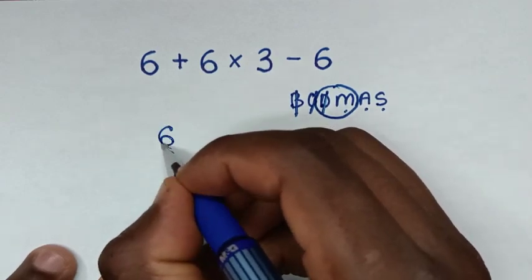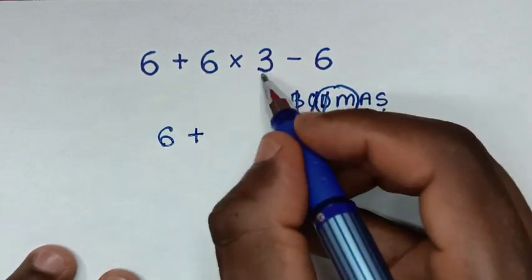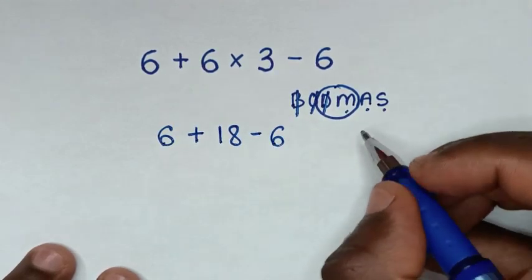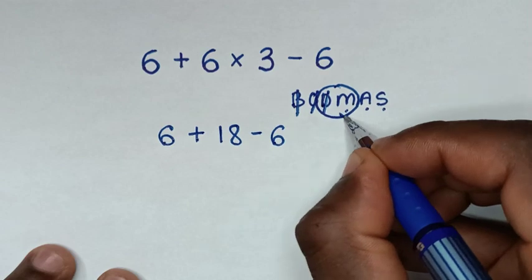So it will be 6 plus 18, then minus 6. Then after we deal with this multiplication,